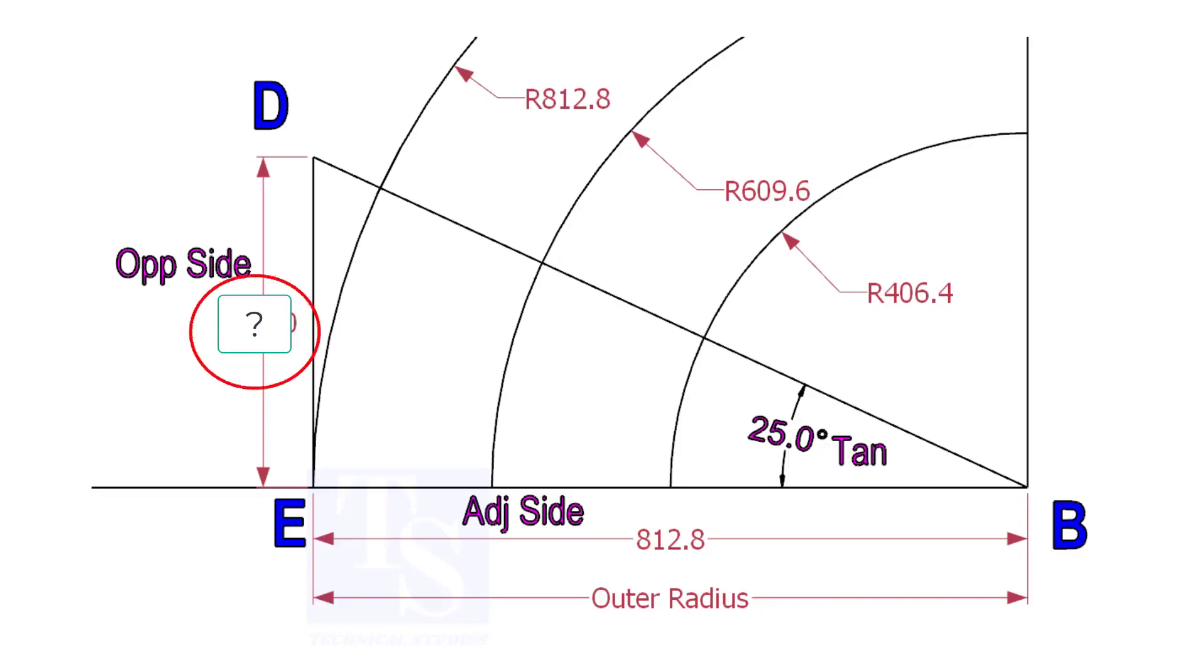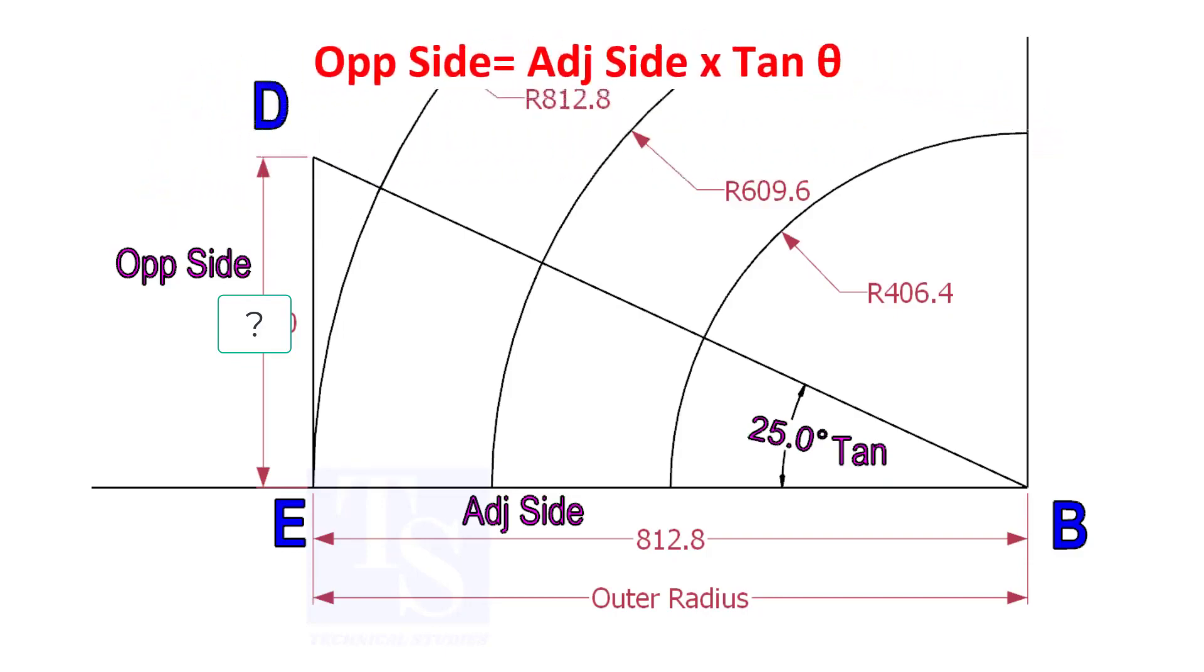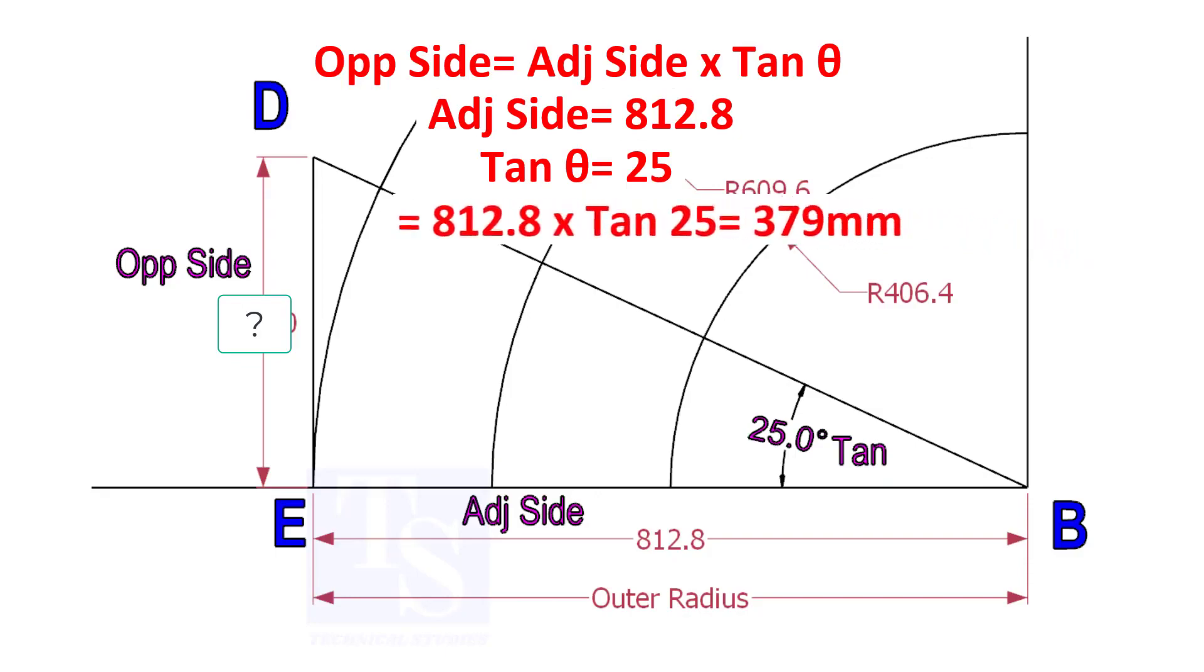To calculate ED, we need to apply the formula tan theta equals opposite side divided by adjacent side. Opposite side equals adjacent side multiplied by tan theta. 812.8 into tan 25 equals 379 millimeters.